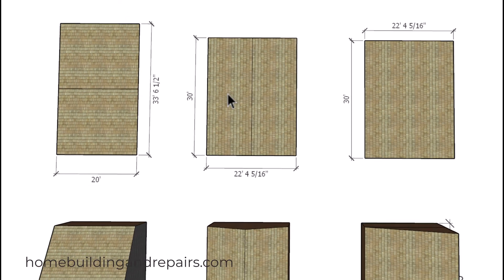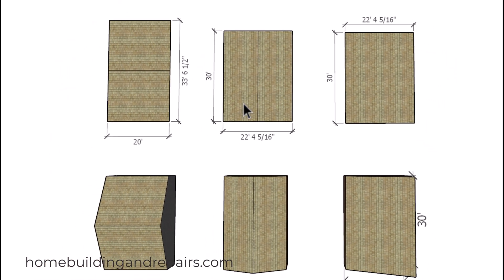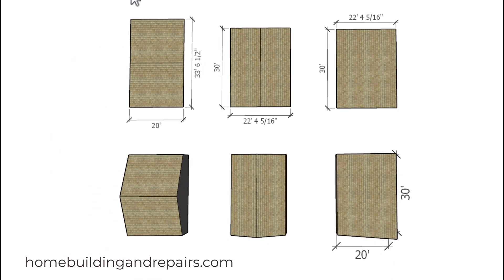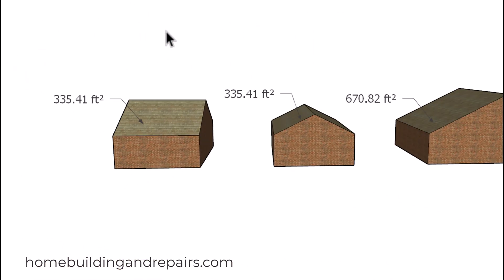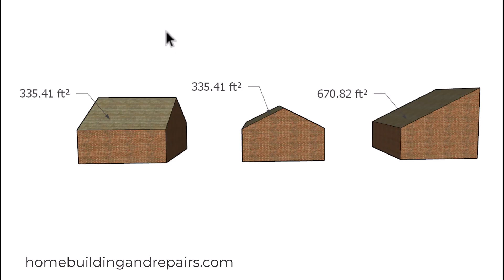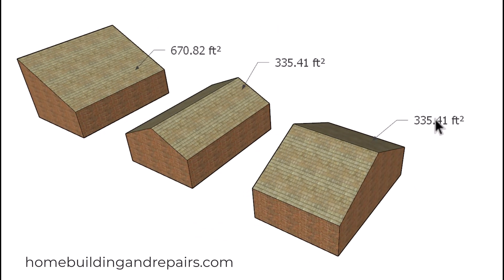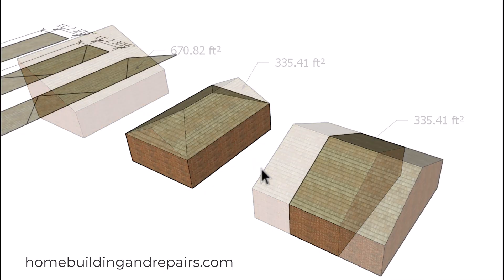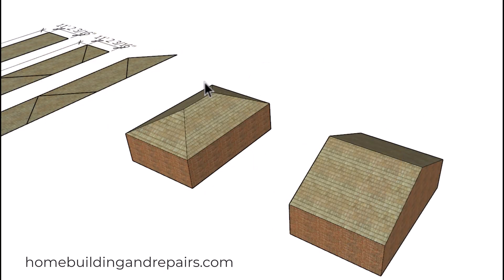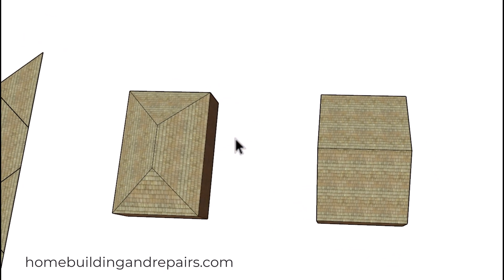If that makes sense you can stop watching here; if not, here are a few more examples. You can see the square footage of this section and of this section, and if we double it we get this amount right here. Believe it or not, if we have a hip roof we're going to run into the same scenario.